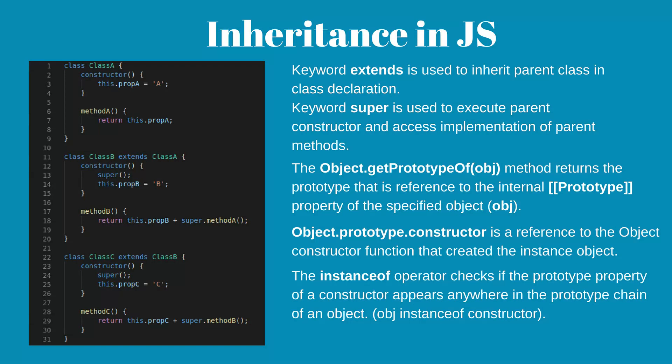In JavaScript, the keyword extends is used to inherit a parent class in a class declaration. The keyword super is used to execute the parent constructor and access the implementation of parent methods. The Object.getPrototypeOf() method returns the value of the internal prototype property of the specified object. Object.prototype.constructor is a reference to the constructor function that created the instance. The instanceof operator checks if the prototype property of a constructor appears anywhere in the prototype chain of an object.